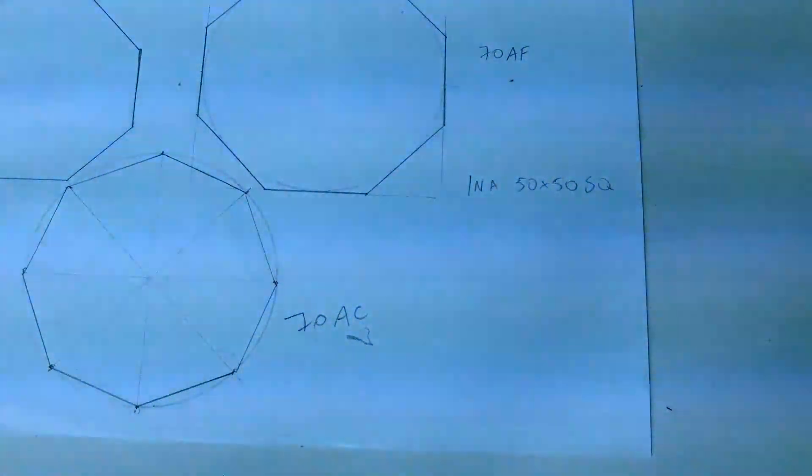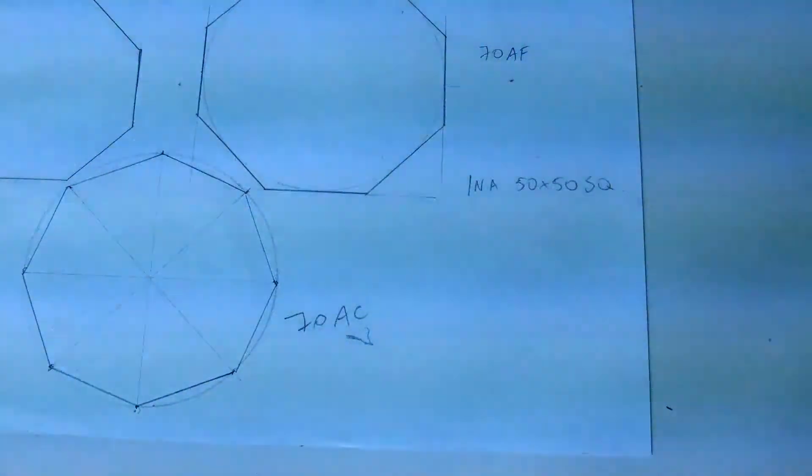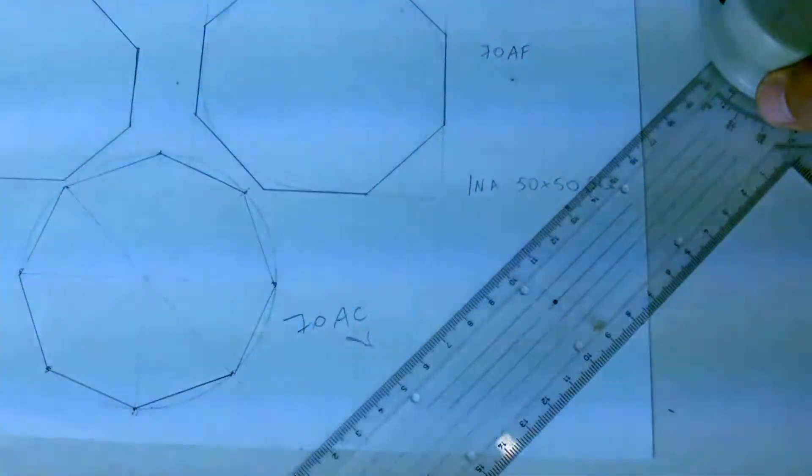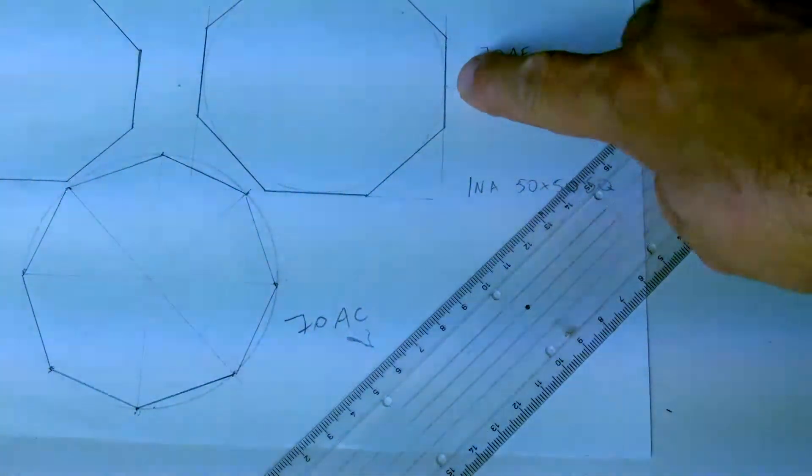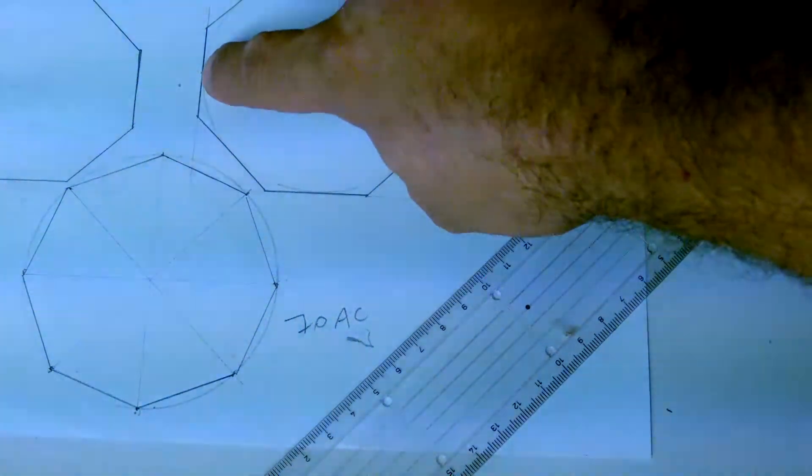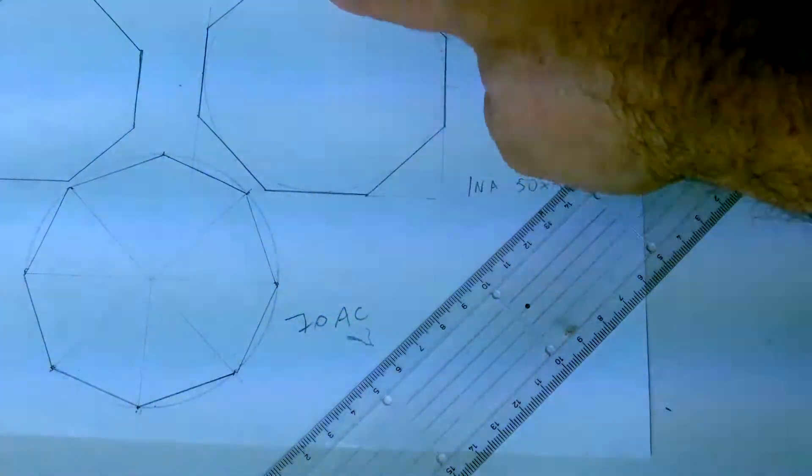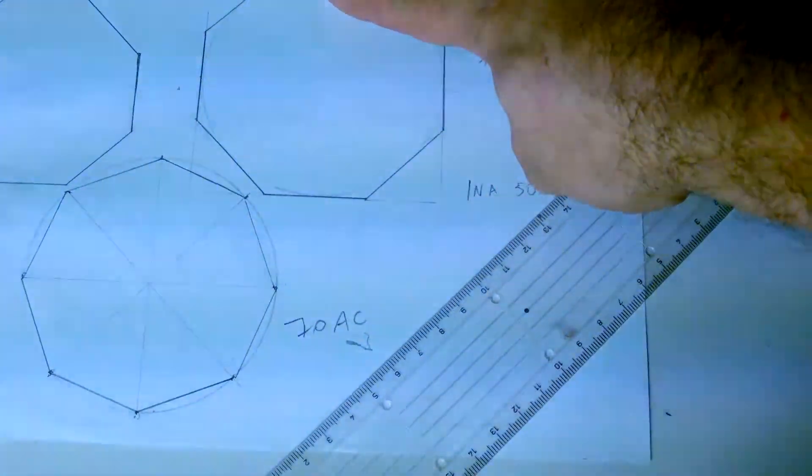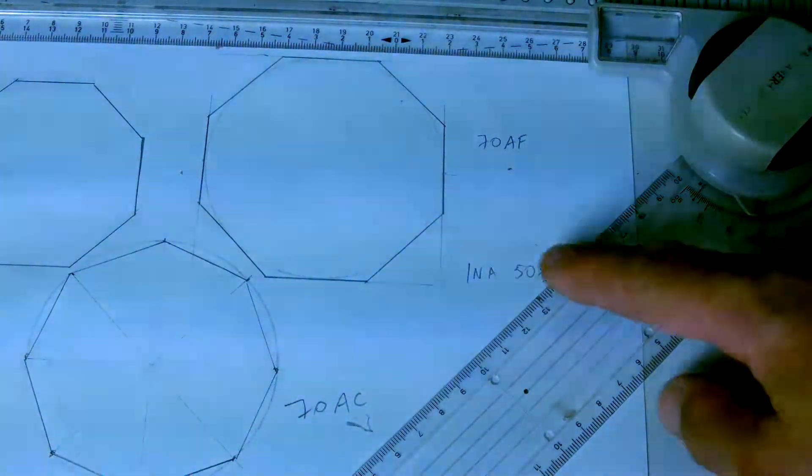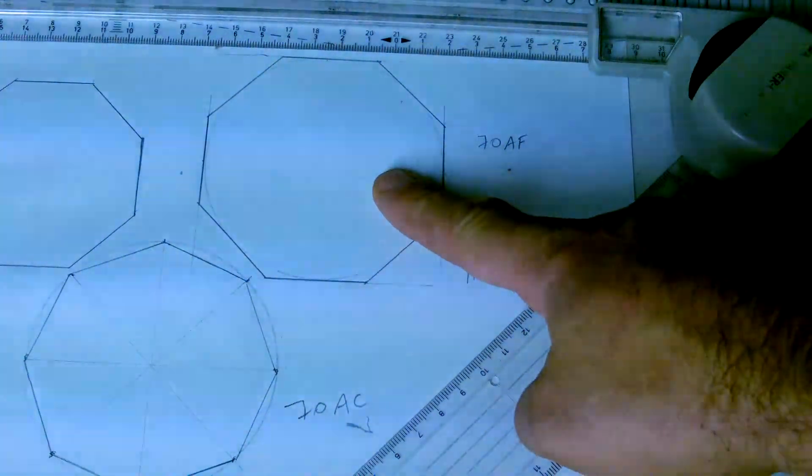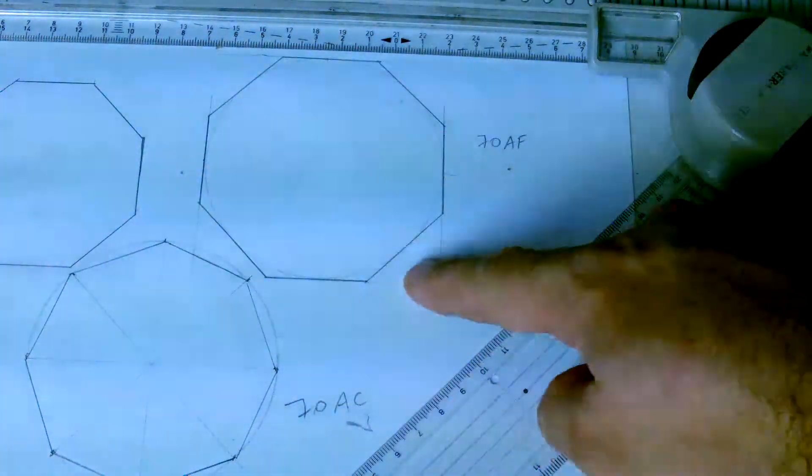I want an octagon in a 50 by 50 square. Now in a 50 by 50 square would mean that from this to this face you'll have 50, and from this face to the opposite face you'll have another 50. So if you're given this, you can use this method.